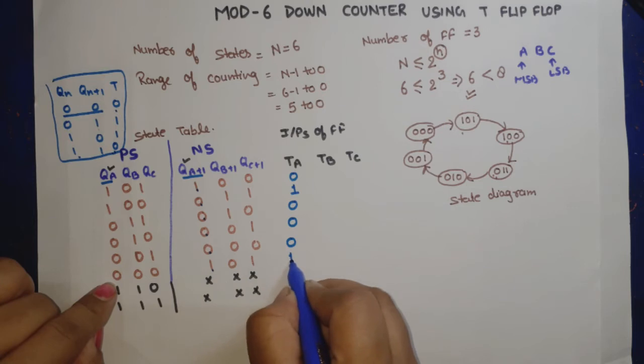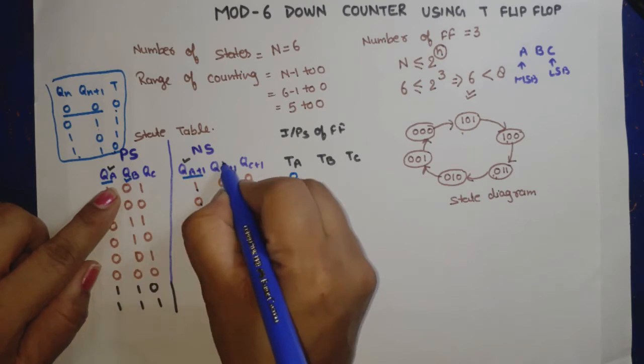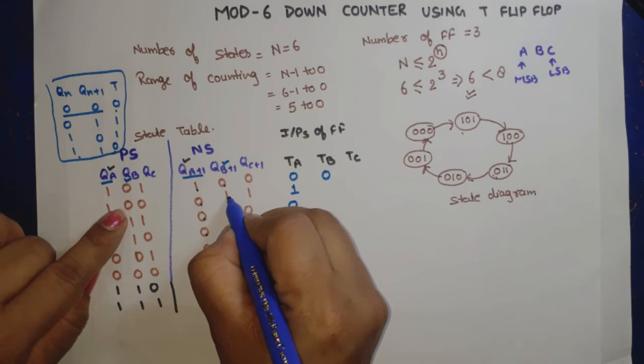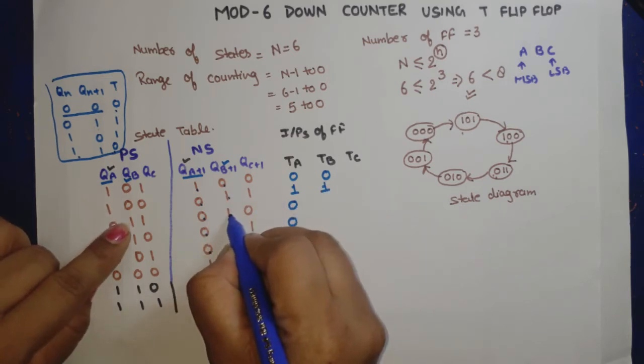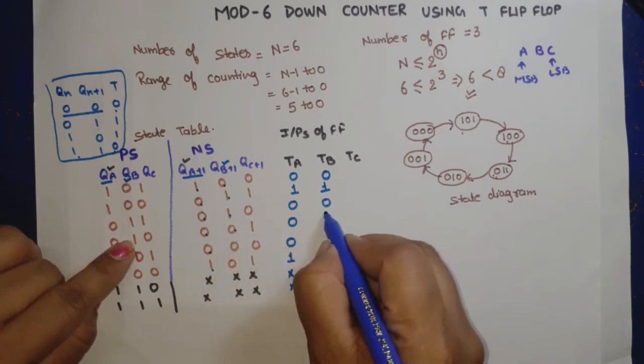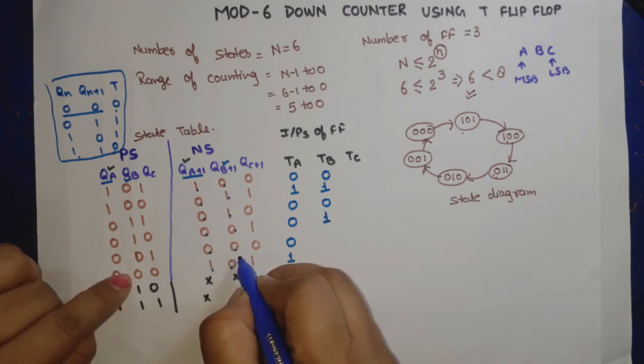Now we write TB considering QB and QB+1. First both are same, so 0. Here both are different, 1 and 0, so TB is 1. In this case both are same, so 0. Here one is 1 and other is 0, so 1 (different). Here both are same, both are same, last two cases are don't care.